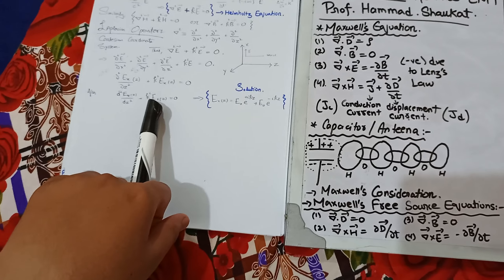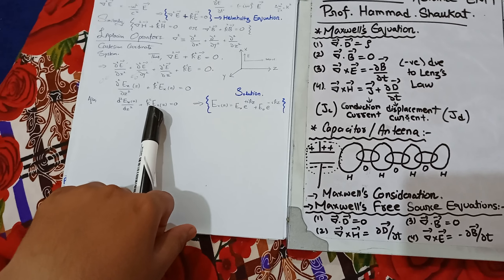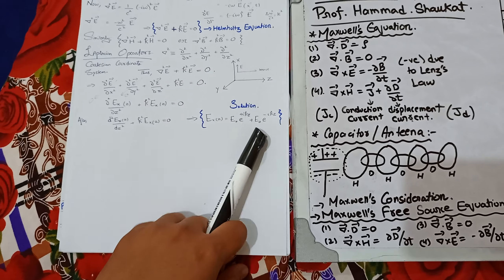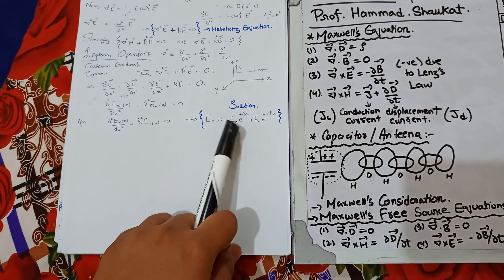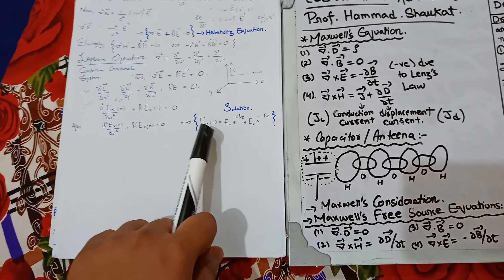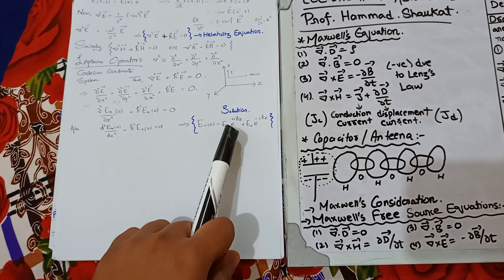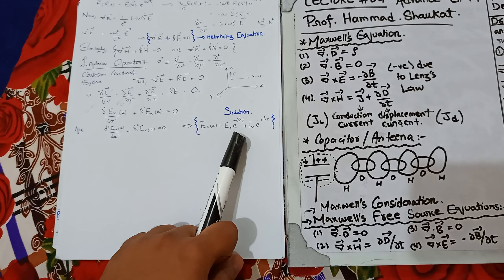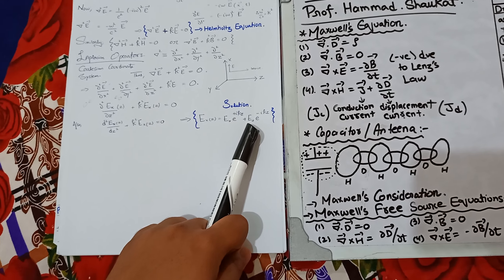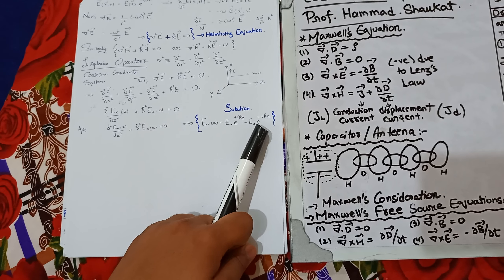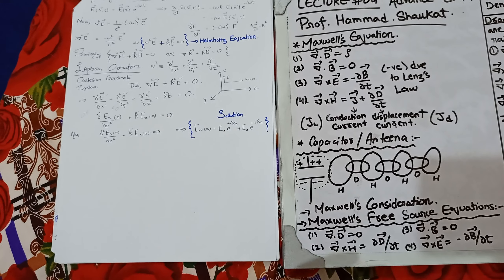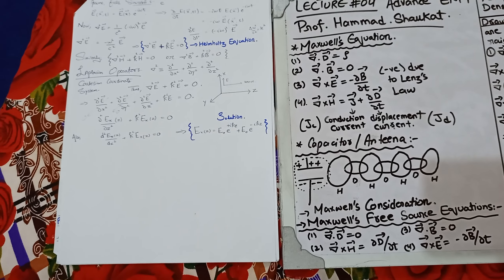Converting to an ordinary differential equation, d²Ex/dz² + k² Ex = 0, the known solution is: Ex(z) = E₀ e^(+ikz) + E₀ e^(−ikz), where E₀ are amplitude constants. This is the final solution for the wave equation of the electric field traveling in the z-direction.